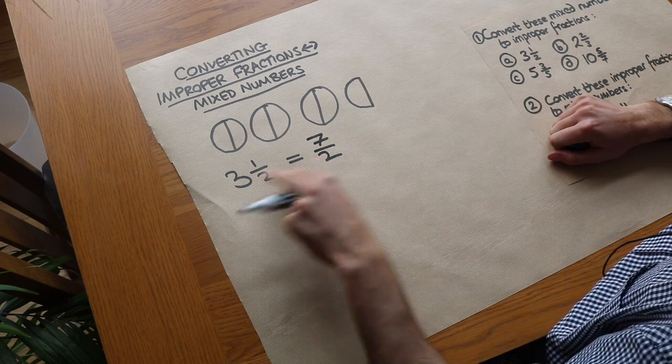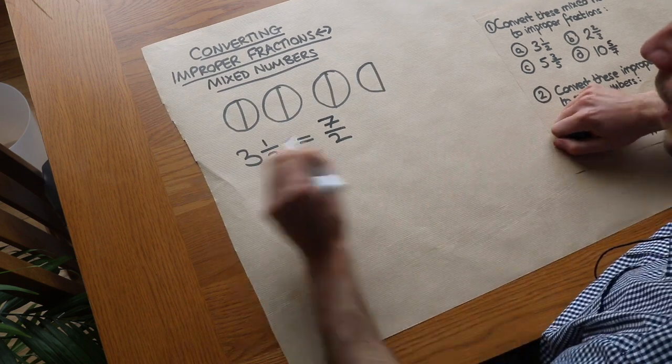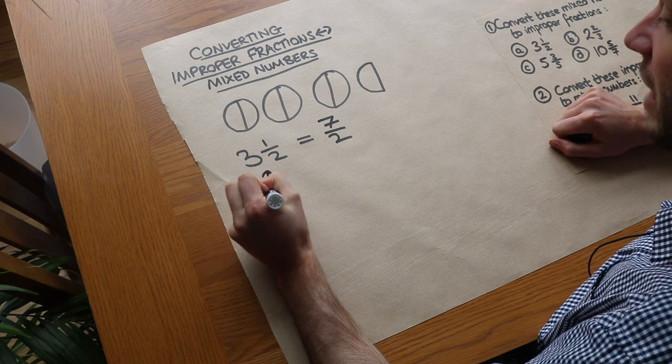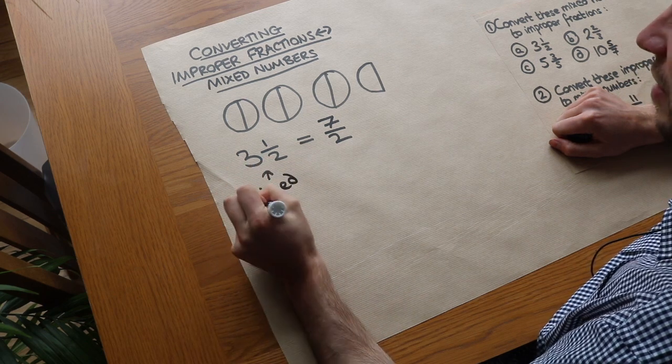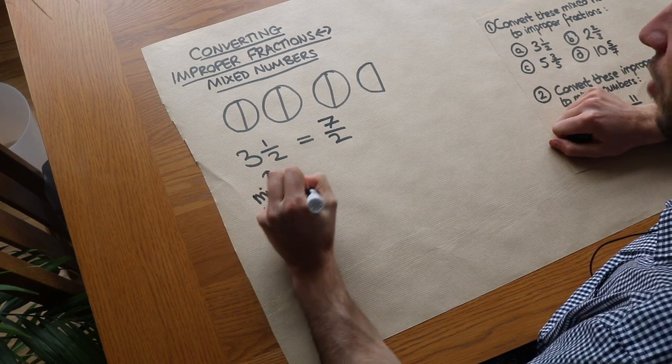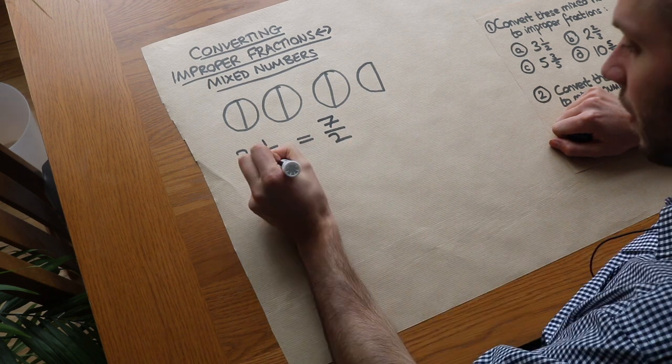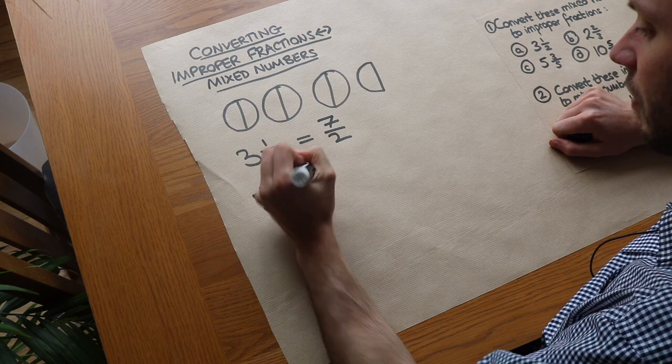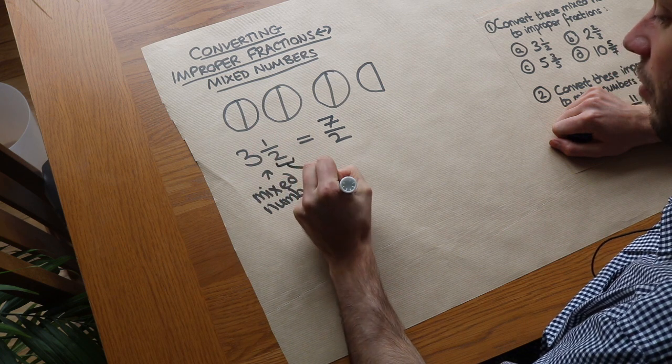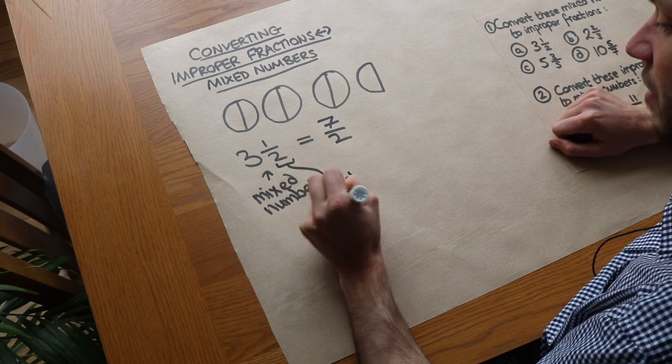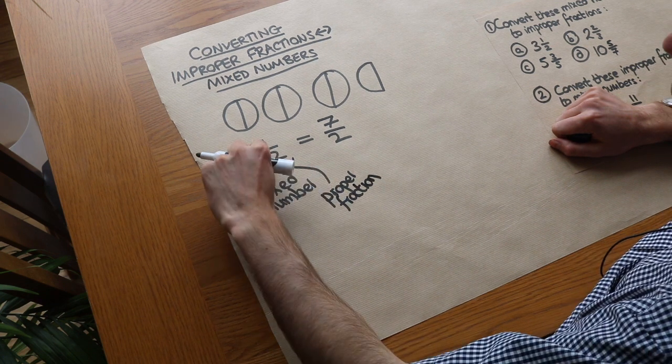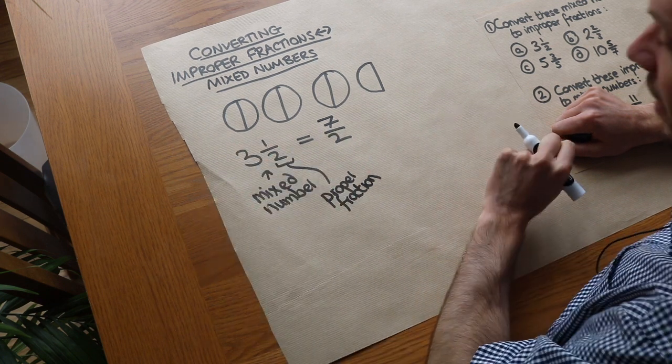So we have two different ways of writing how much pizza we have. This is known as a mixed number, and the reason it's known as a mixed number is because we've got a mixture of a whole number and a fraction. This thing on its own, by the way, this half is known as a proper fraction, and it's known as a proper fraction because the numerator is less than the denominator.